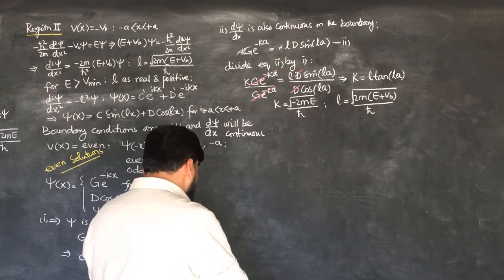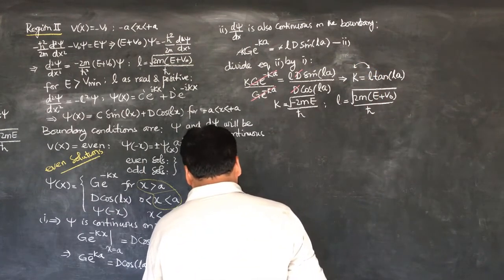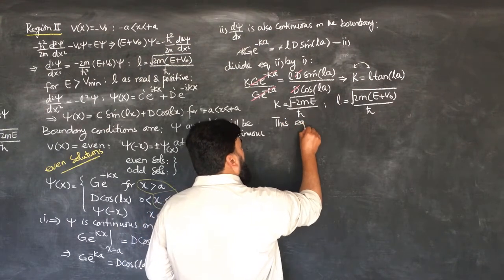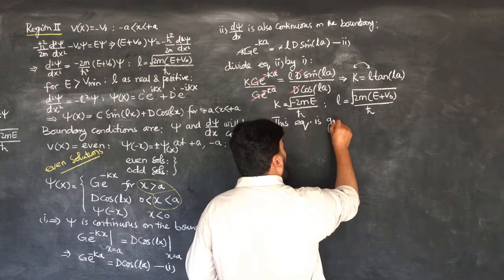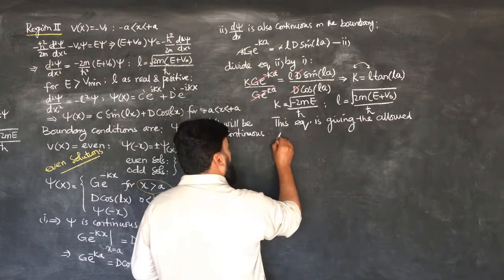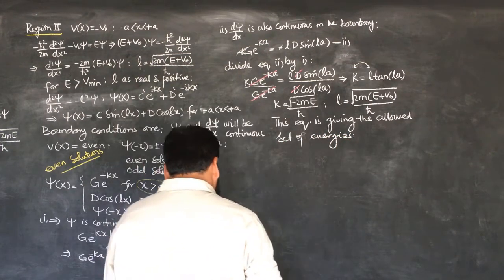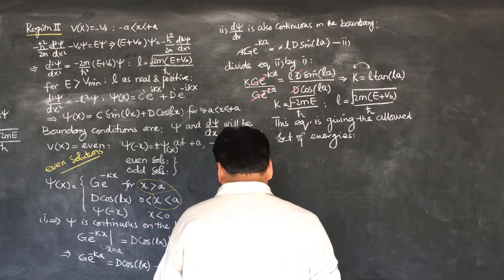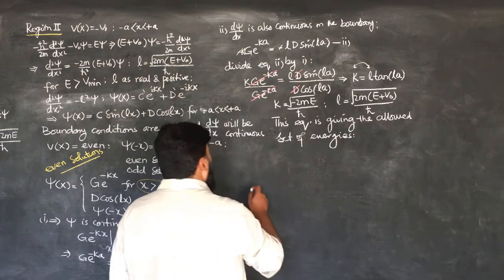This equation is actually relating K with L, and it is giving us the allowed energies for this geometry. The equation K equals L tangent(LA) gives the quantized set of energies. These are the energies that are allowed.